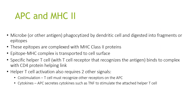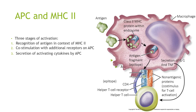Microbes or other antigens are phagocytosed by dendritic cells and digested into fragments called epitopes. These epitopes are complexed with MHC class 2 proteins, and the epitope-MHC complex is transported to the cell surface. Specific helper T cells with T cell receptors that recognise the antigen bind to the complex via their CD4 protein. Helper T cell activation also requires two other signals: co-stimulation and cytokines. The T cell must recognise other receptors on the antigen-presenting cell, and the antigen-presenting cell secretes cytokines such as tumour necrosis factor to stimulate the attached helper T cell. There are three stages: recognition of antigen in the context of MHC class 2, co-stimulation of additional receptors on the antigen-presenting cell, and secretion of activating cytokines by the APC.